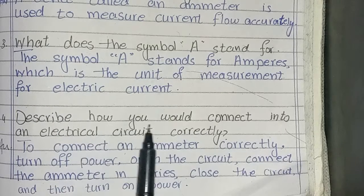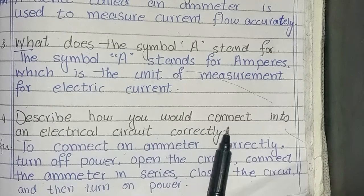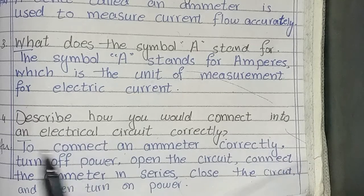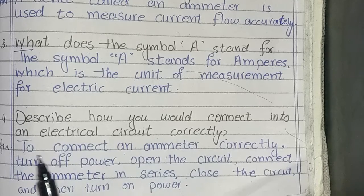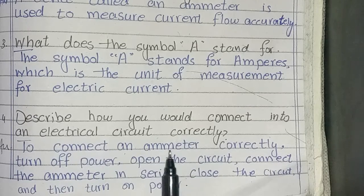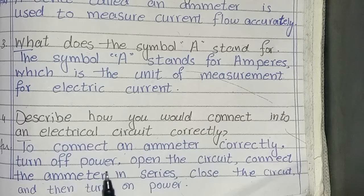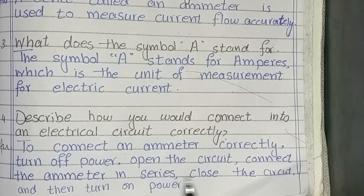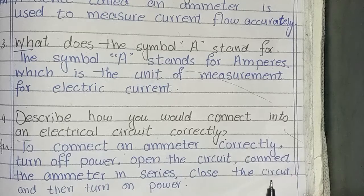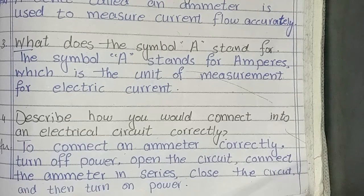Describe how you would connect an ammeter into an electrical circuit correctly. To connect an ammeter correctly: turn off power, open the circuit, connect the ammeter in series, close the circuit, and then turn on power.